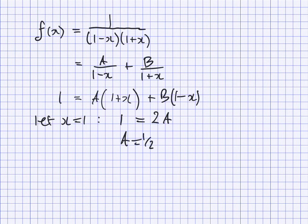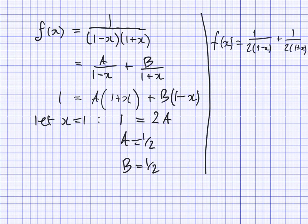And B must also equal 1 half by comparing the coefficients, which then means that we can rewrite f of x as follows: 1 over 2, 1 minus x, plus 1 over 2, 1 plus x. Take that back to our integration and work from there.